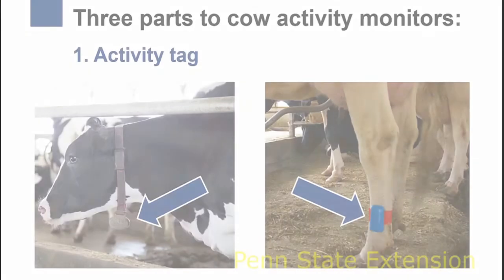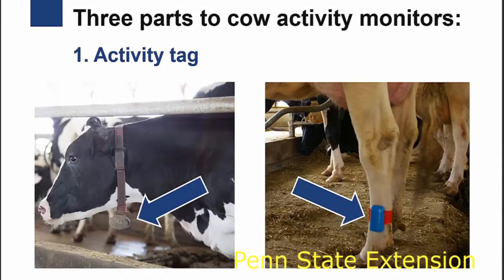There are three parts to cow activity monitors. The first is an activity tag containing the accelerometer, which is mounted on either the cow's leg, a collar around her neck, or on her ear, depending on the brand of activity monitor used. The activity tag uses radio frequency identification, RFID, technology to wirelessly transfer data.